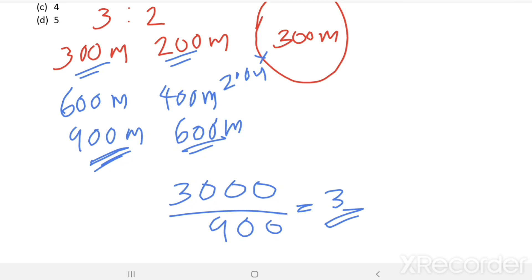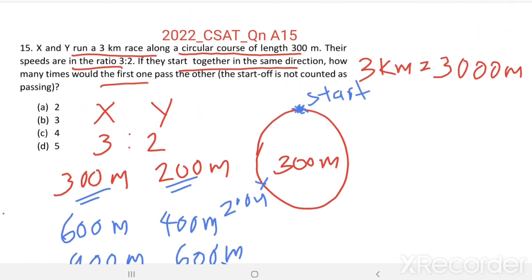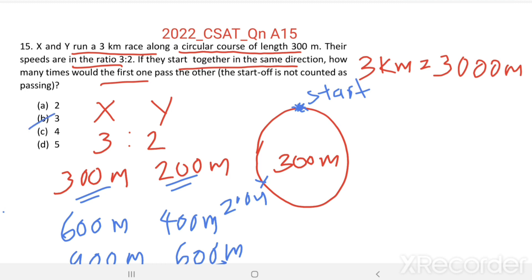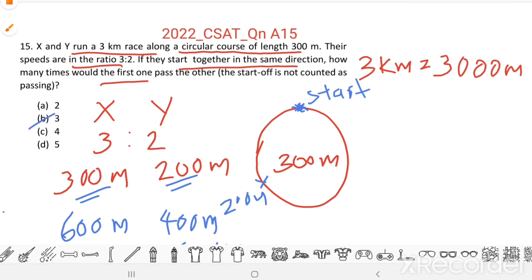3 times X passes Y. Option B, 3 is the right answer.